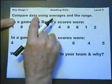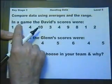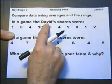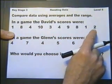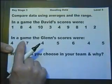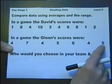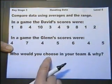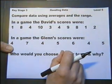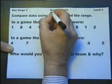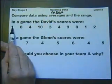Comparing data using averages and range. Now we've got a situation where in a game, David's scores were, these were David's scores over a period of time. In a game, Glenn's scores were, and this was Glenn's scores over a period of time. Who would you choose in your team and why? So one way of looking at it is to see who scores the best average or the best mean. So we're going to add them up and divide by how many there are.